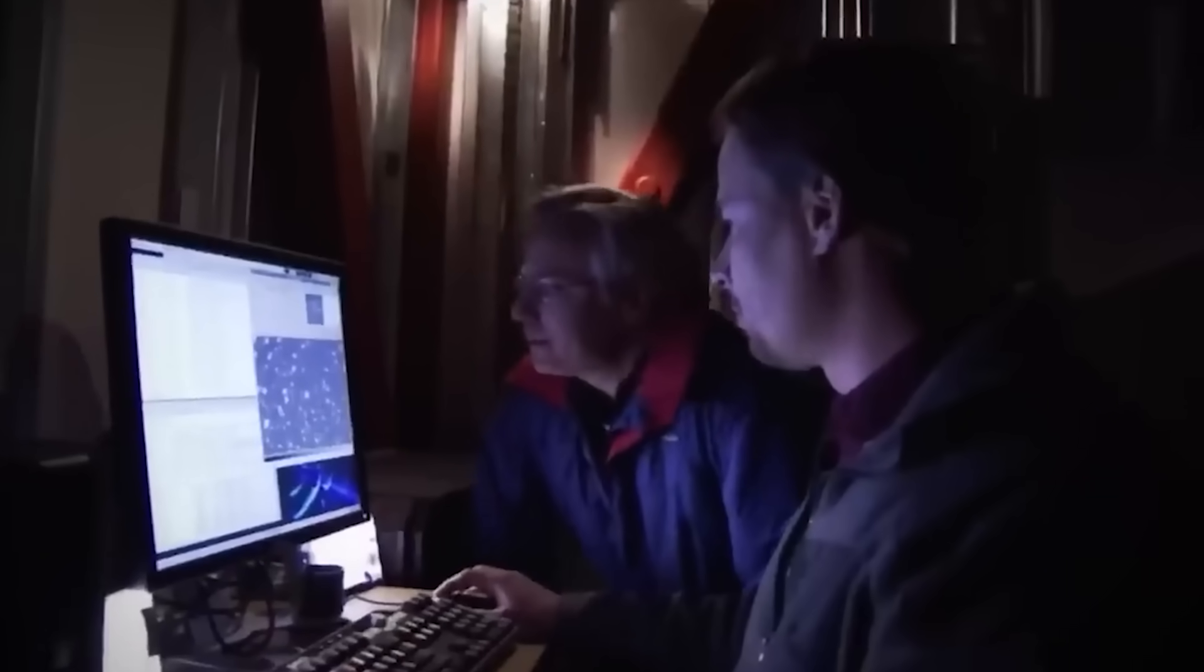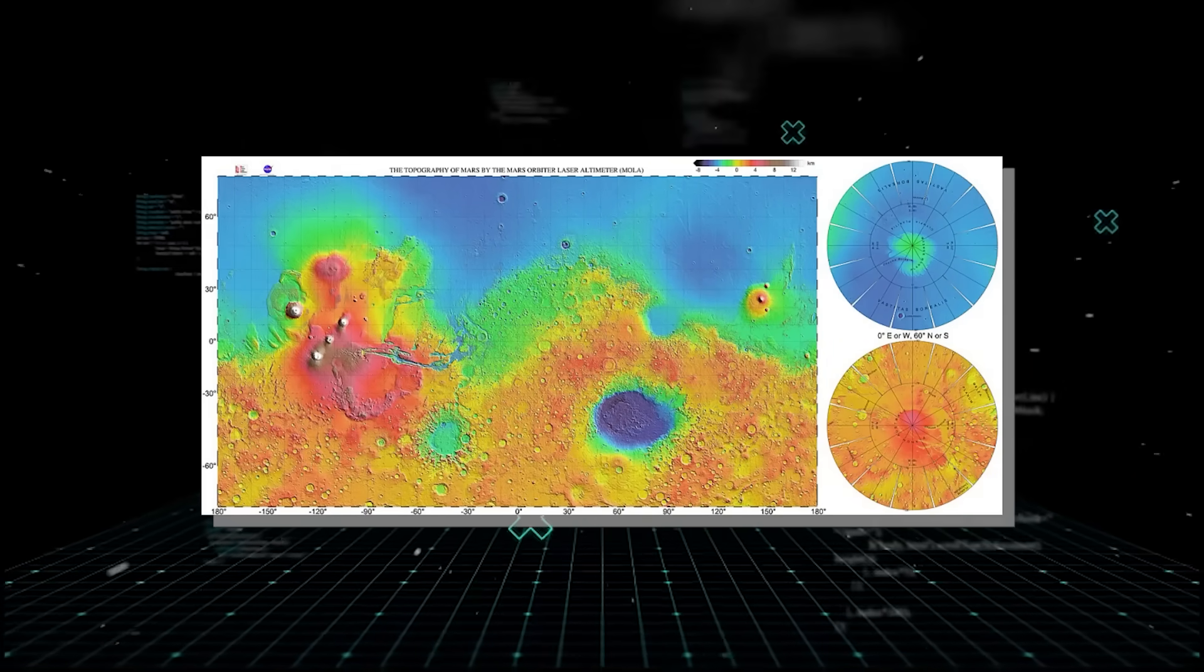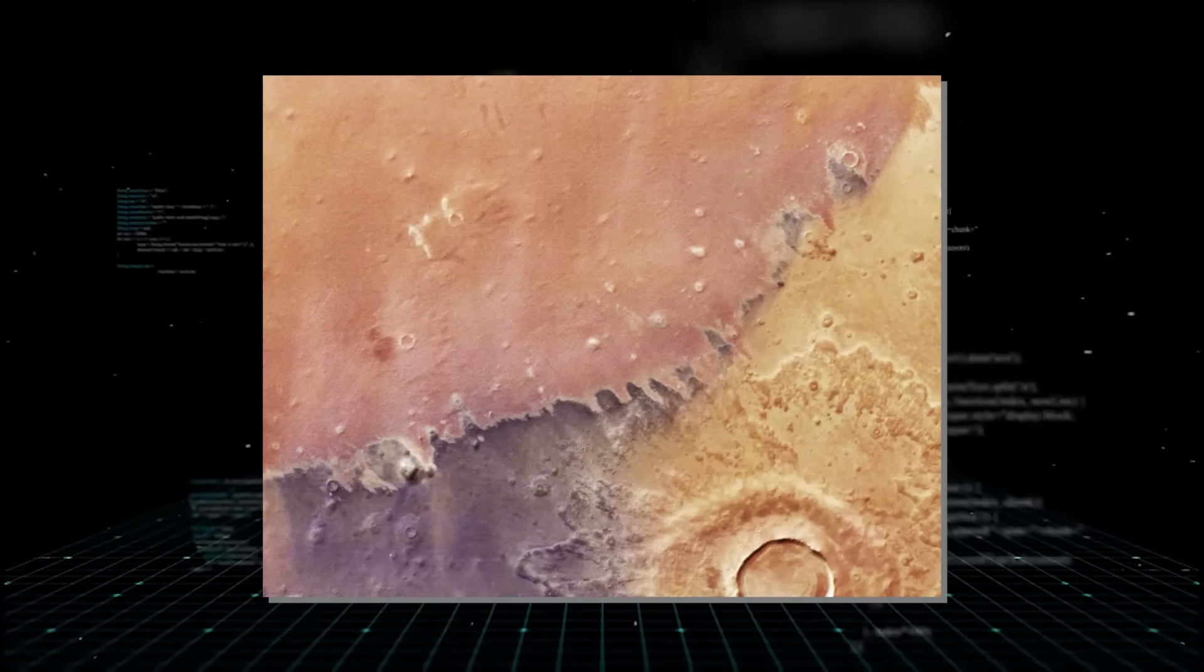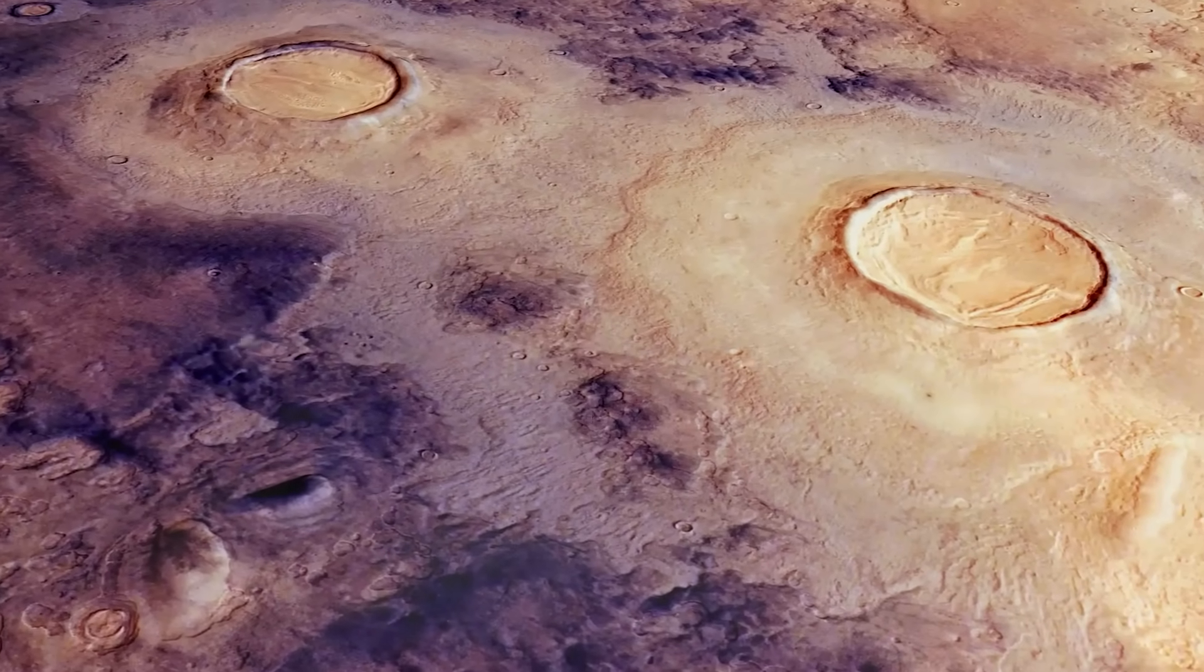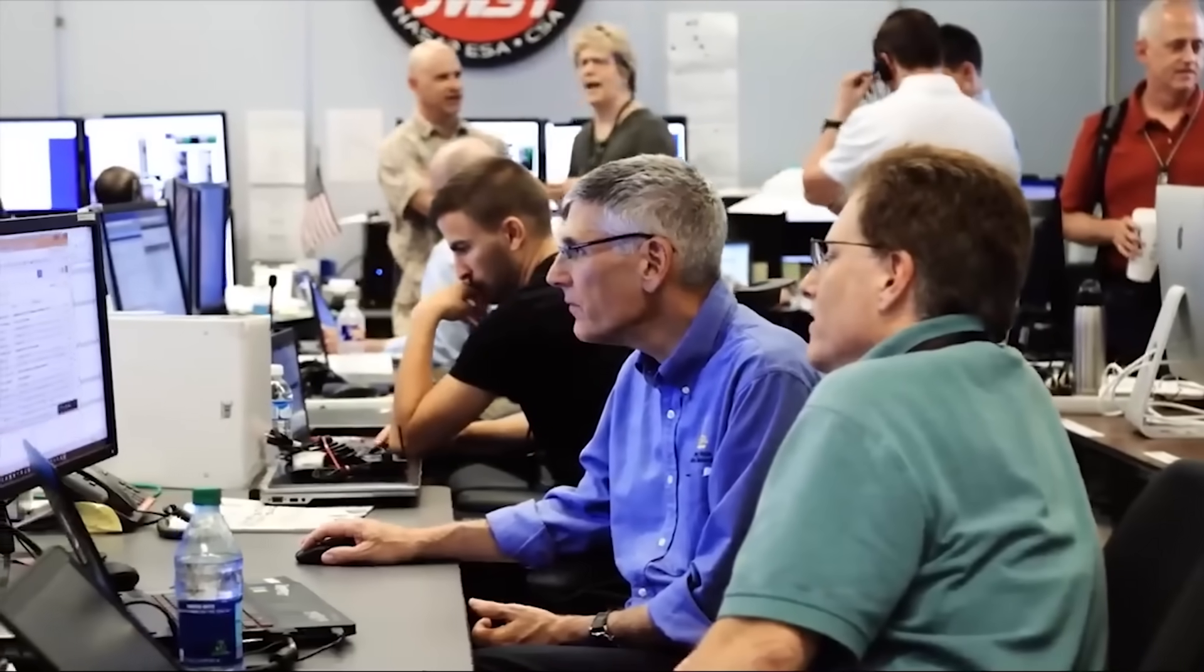The leaked data doesn't just pinpoint a date, it suggests a potential impact zone in the northern lowlands, a region known as Arcadia Planitia. This area is relatively smooth and is believed to harbor significant subsurface water ice, making the potential impact a scientific gold mine.